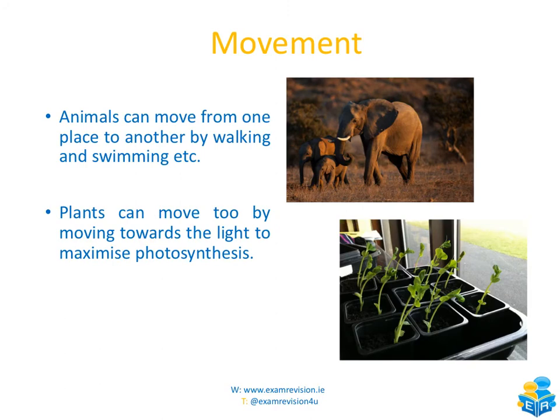The first characteristic is movement. We can all move — we can walk from one place to another. Fish can swim from one place to another, and birds can fly from one place to another, so all animals are able to move. It's important to remember that plants are actually able to move as well. If you look at plants, they'll always grow towards the sunlight. The plants in the diagram on the right hand side are beginning to bend towards the window because the sunlight is coming through.